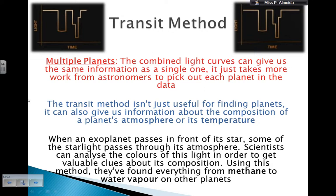So I can have an idea of the density of the planet. I can figure out if it's a rocky planet or a gaseous planet. And then, just by looking at the transit event, I can also pick up data about the atmosphere of the planet. And there it is. When an exoplanet passes in front of its star, some of the starlight passes through its atmosphere. So the scientists can analyze the colors of this light in order to get valuable clues about its composition, the composition of the atmosphere. Using this method they found everything from methane to water vapor on other planets.